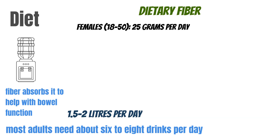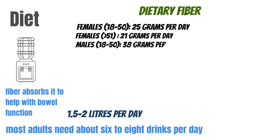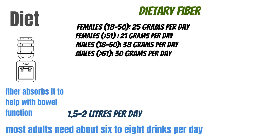So dietary fiber requirements. In adults, we should be aiming for around 25 to 30 grams per day. You can get fiber from numerous sources: fruits, vegetables, legumes, nuts, seeds, and grains — we'll get into more detail in a moment. The reason we're consuming all this fiber is because it absorbs water, helps facilitate things throughout the large intestine, and helps the bacteria in our gut.